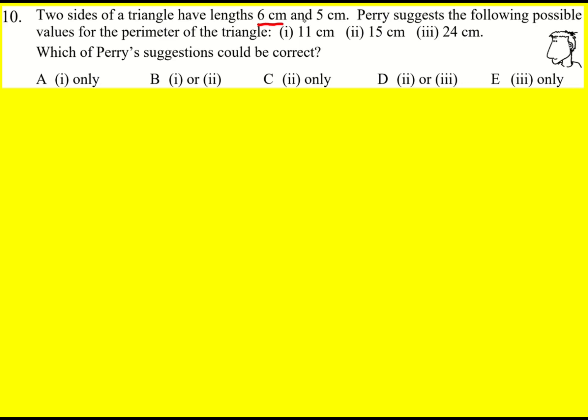Two sides of a triangle have length 6 centimeters and 5 centimeters. Perry suggests the following possible values for the perimeter: 11, 15, and 24, which could be correct. So I'm going to do this by taking them one at a time. Let's go with the first one.